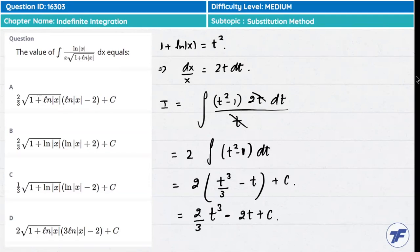Substitute back and you'll get the answer. In fact, you need to write this: take the t common. After taking t common, this will be 2t² divided by 3 minus 2, plus some constant. Now the t value will come here: under the root of 1 plus ln(|x|). And the t² value is already available if you put it in the option.